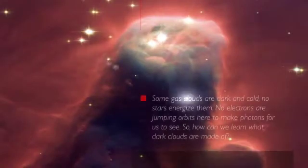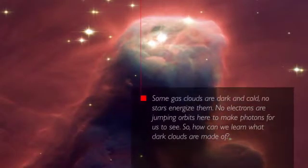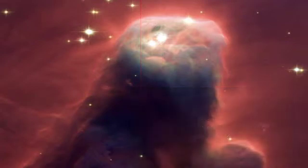Some gas clouds are dark and cold, and no stars energize them. No electrons are jumping orbits here to make photons for us to see. So how can we learn what dark clouds are made of?